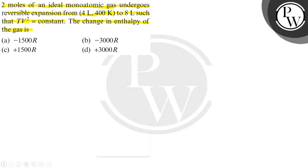Let us find the change in the enthalpy of the gas. Now, T1 V1 square is equal to T2 V2 square, as TV square is equal to constant.